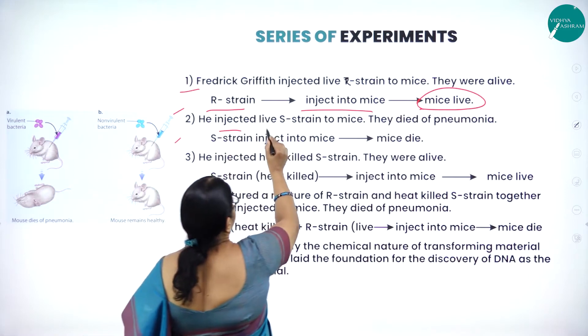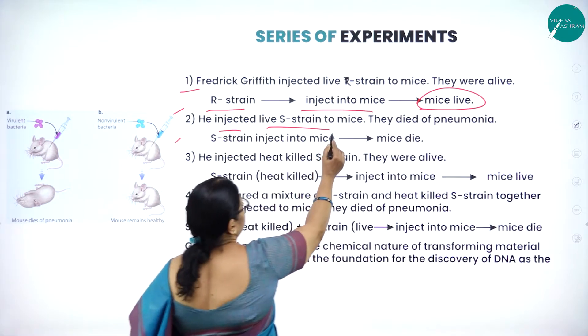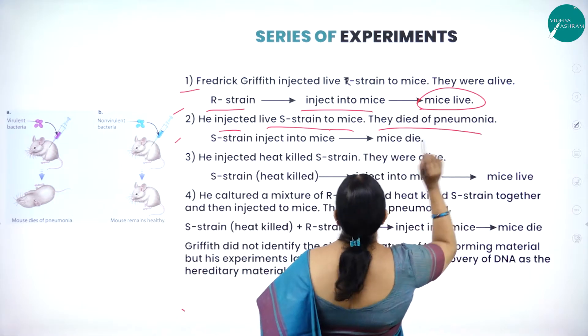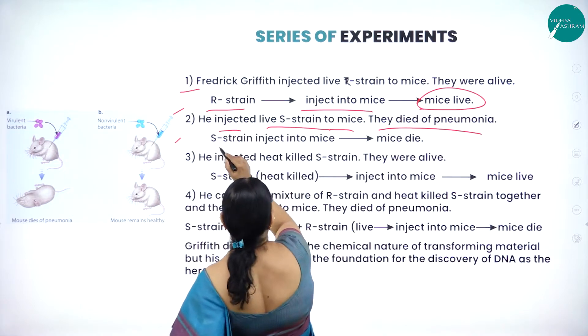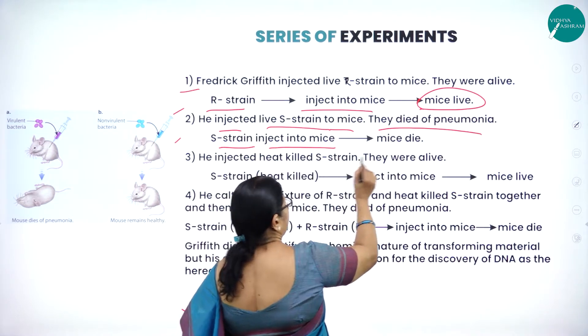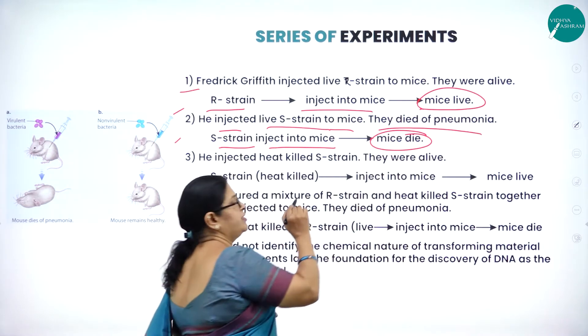In the second step, he injected the live S-strain into mice. They died of pneumonia — S-strain injected into mice, the mice died.